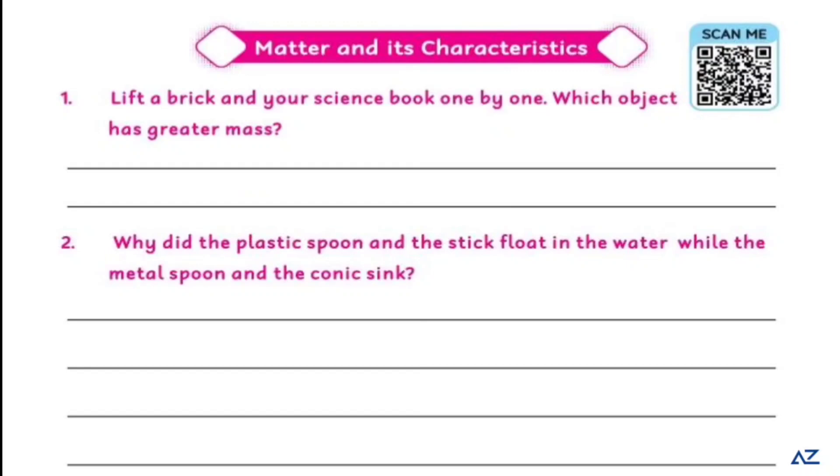Question number two is: why did the plastic spoon and the stick float in the water while the metal spoon and the coin sink? Now they are saying that plastic spoon and stick also with wood, so why do they float on the water? While the metal spoon and the coin sink because it is heavy.